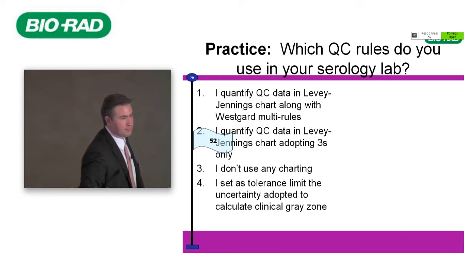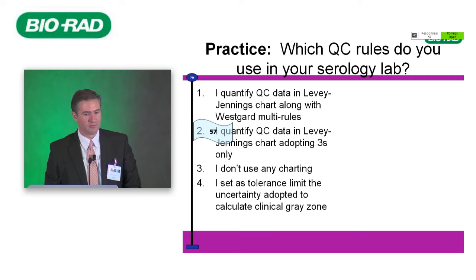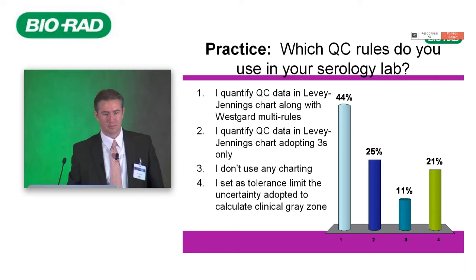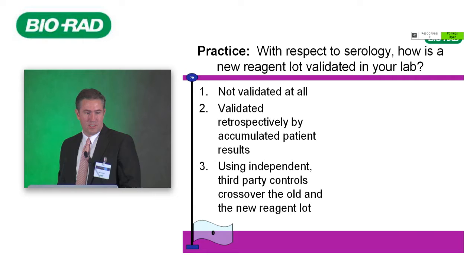About the same number of respondents use a mix — mostly quantifying QC data in Levy-Jennings charts along with Westgard multi-rules. With respect to serology, how is a new reagent lot validated in your lab?